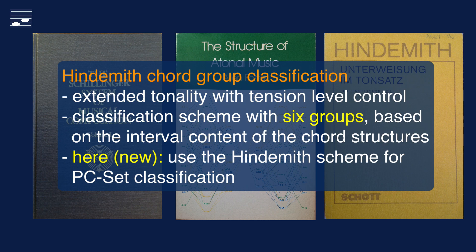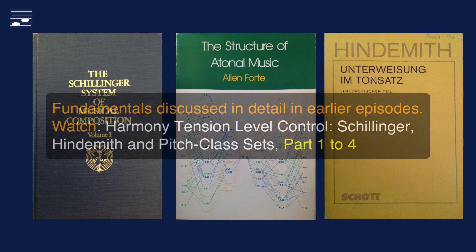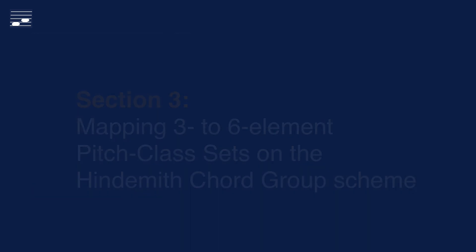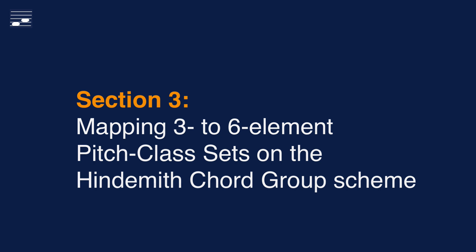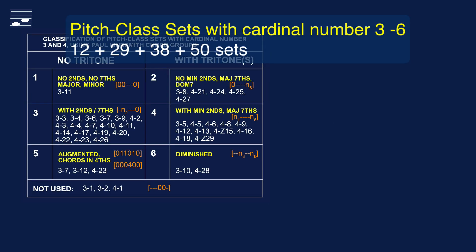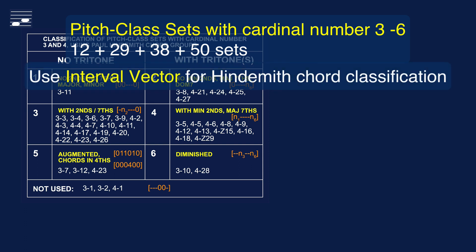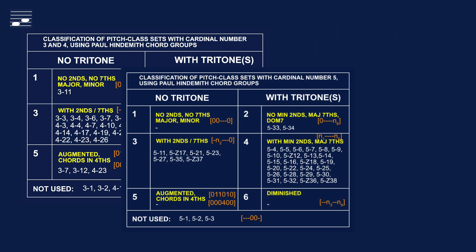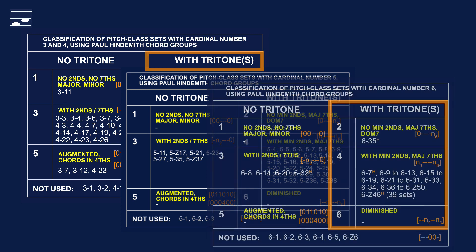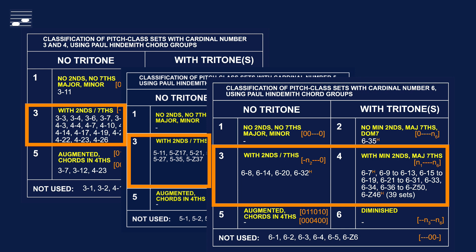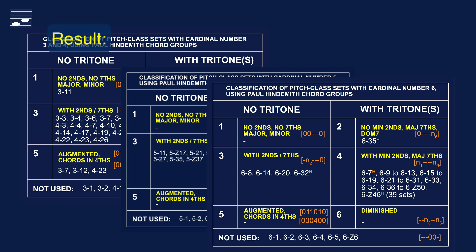We have been grouping the sets according to the Hindemith classification scheme, which discerns six chord groups depending on the values of the elements in the interval class vector. In the previous episodes I looked at three to six element pitch class sets, a total of 129 sets. Inspecting the interval class vector of each set allowed sorting the sets into one of six Hindemith chord groups. The main division is based on the presence of tritone intervals in the chord structures, and then on the presence of weak and sharp dissonances. While displaying the diagrams from the previous episodes I summarise the results.